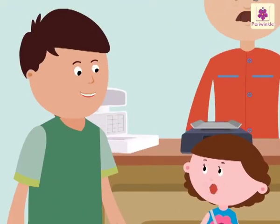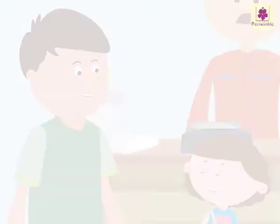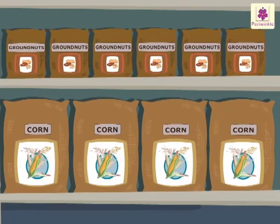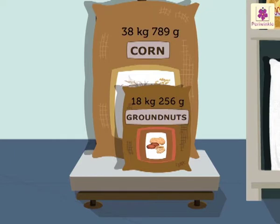Now do we have to buy anything else? Yes, dear. We have to buy some corn and ground nuts. We bought 38 kilograms 789 grams of corn and 18 kilograms 256 grams of ground nuts.